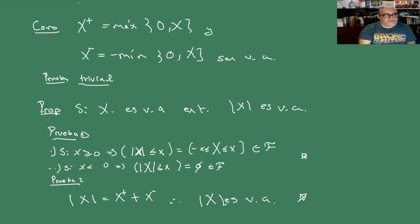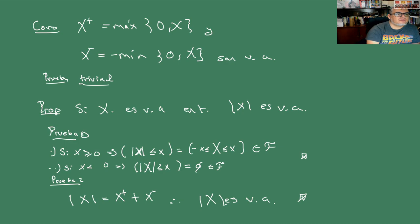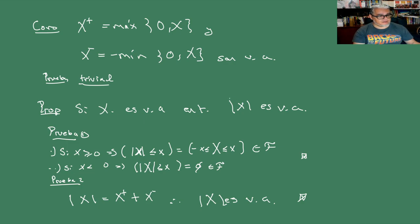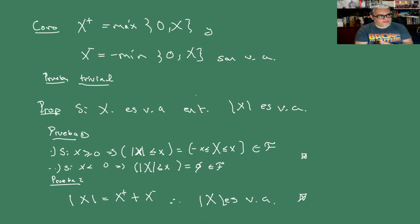Lo último que vimos fue esta propiedad: si tenemos una variable aleatoria, entonces el módulo — el valor absoluto — es una variable aleatoria también. Ahora, no necesariamente si el módulo de una función es variable aleatoria, la función es variable aleatoria. Vamos a ver un ejemplo de eso. Es un contraejemplo interesante.